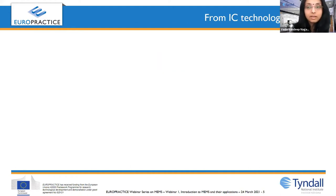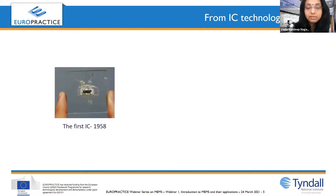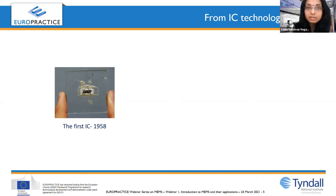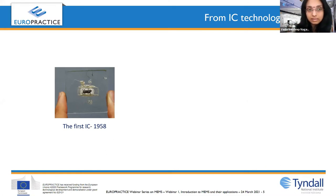Let's look at the history of MEMS. It all began when the first integrated circuit came into existence. In 1958, TI came up with the first IC. From there it evolved, because Moore made an observation — Moore's Law — stating that every 18 months, the number of transistors embedded into a square inch of silicon was doubling. So there was a need to miniaturize sensors and actuators as well, and that's why the evolution happened.